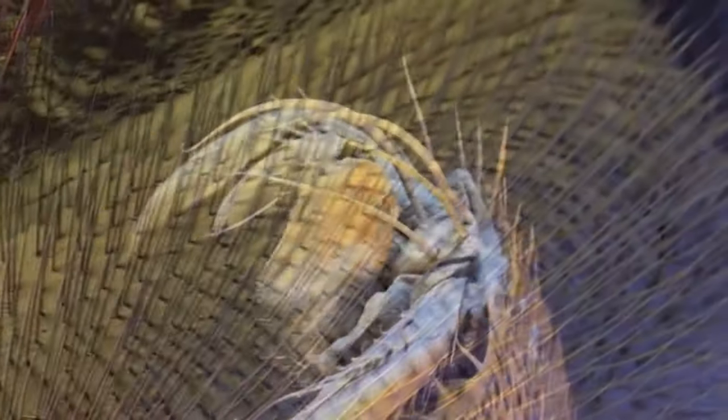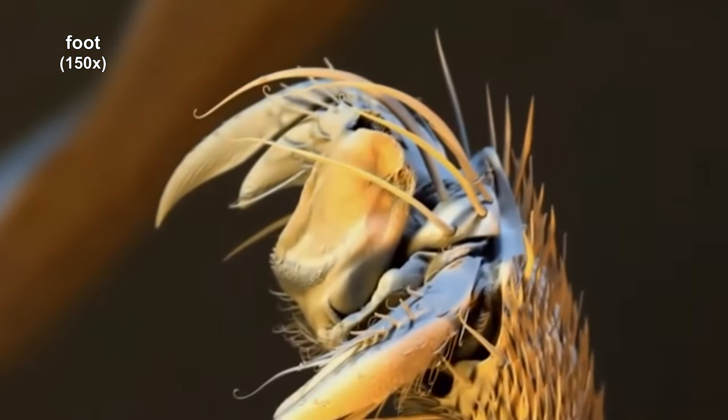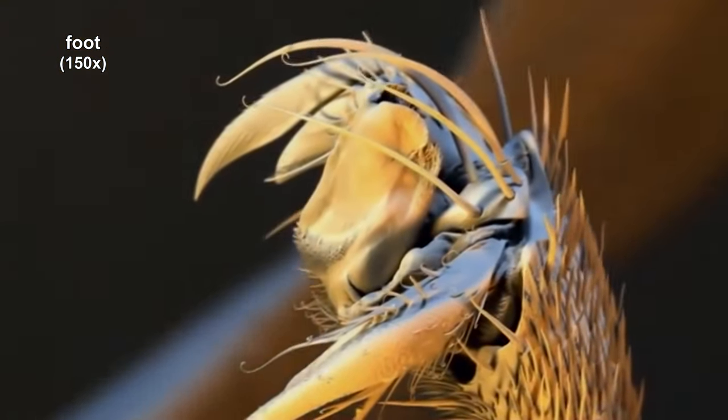Because it's not light, there is no color associated with the images. Color can be added after the image is created by the electron microscope.